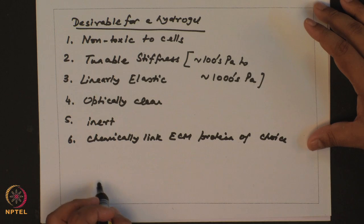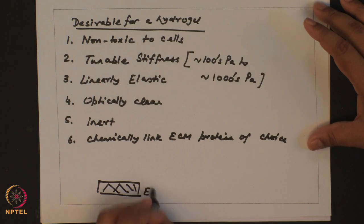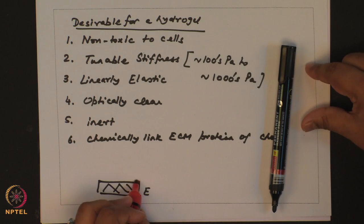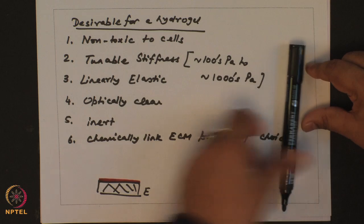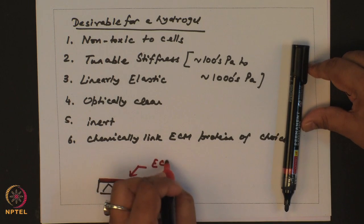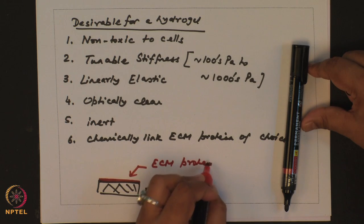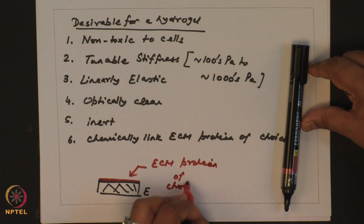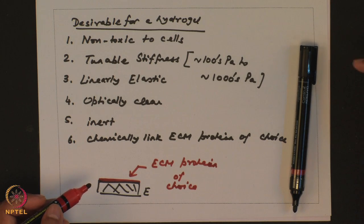Thus you have a polymer where you can make a material whose bulk stiffness E you can tune and this gel is typically functionalized with your ECM protein of choice. So that you can make it relevant to different contexts. For example, if you are working with neuronal cells and you are interested in behavior of neuronal cells in a brain mimetic environment, this ECM protein might be laminin or in some other case if you are working with smooth muscle cells you might use collagen with E order 10 kilopascal and so on and so forth.